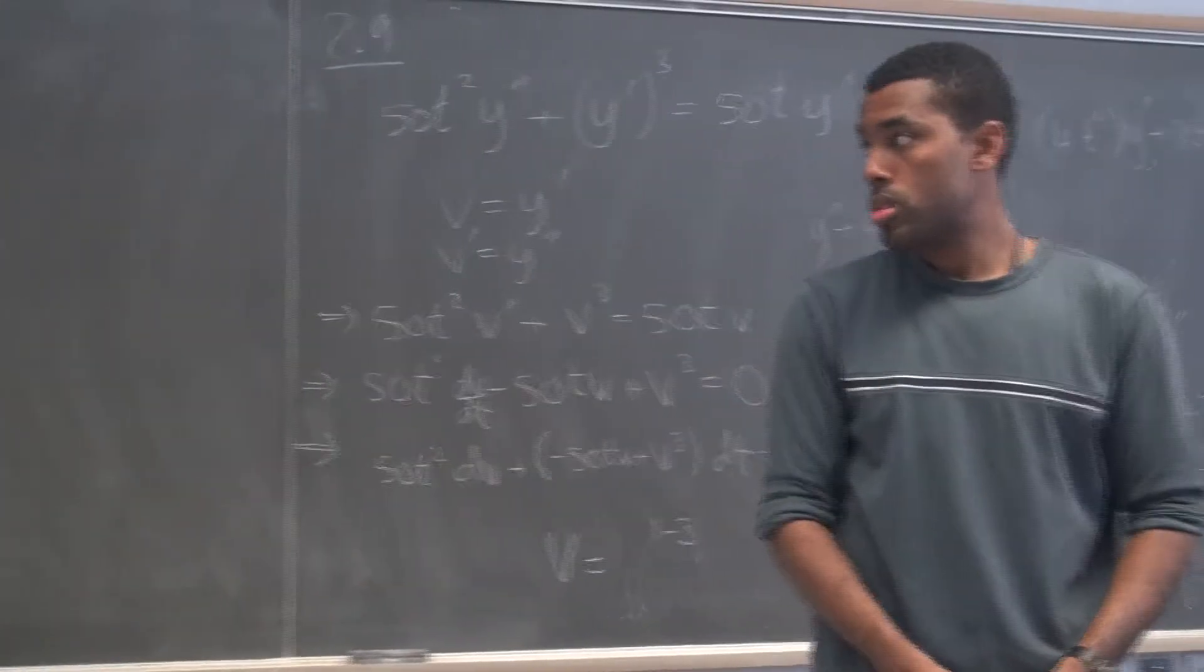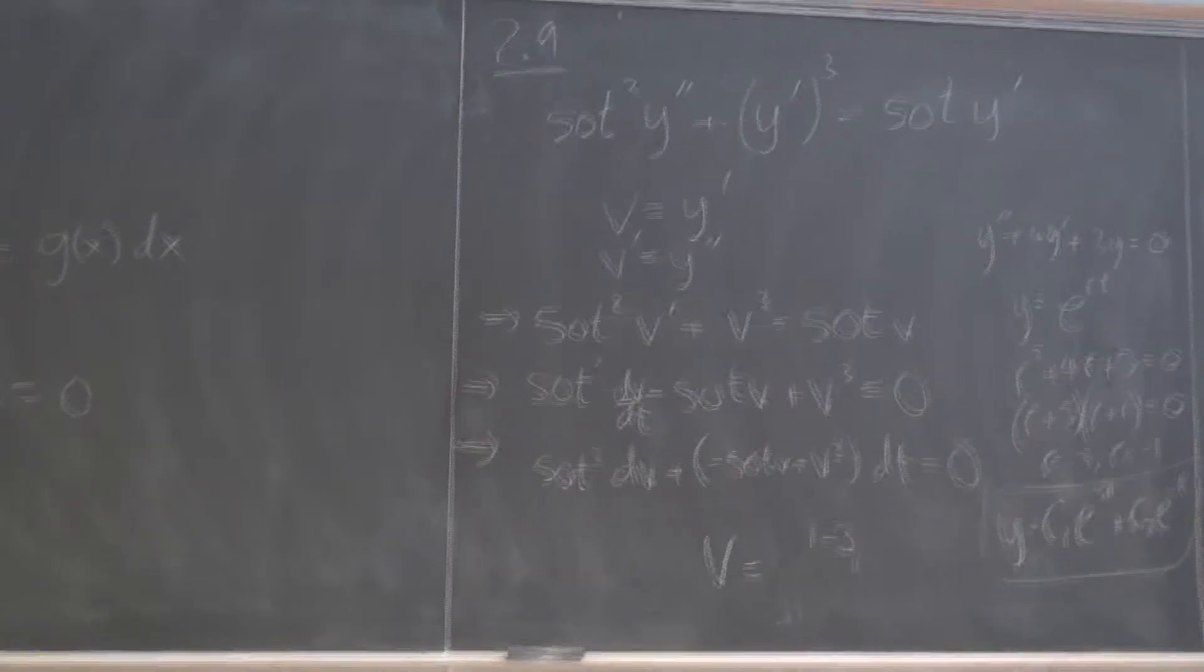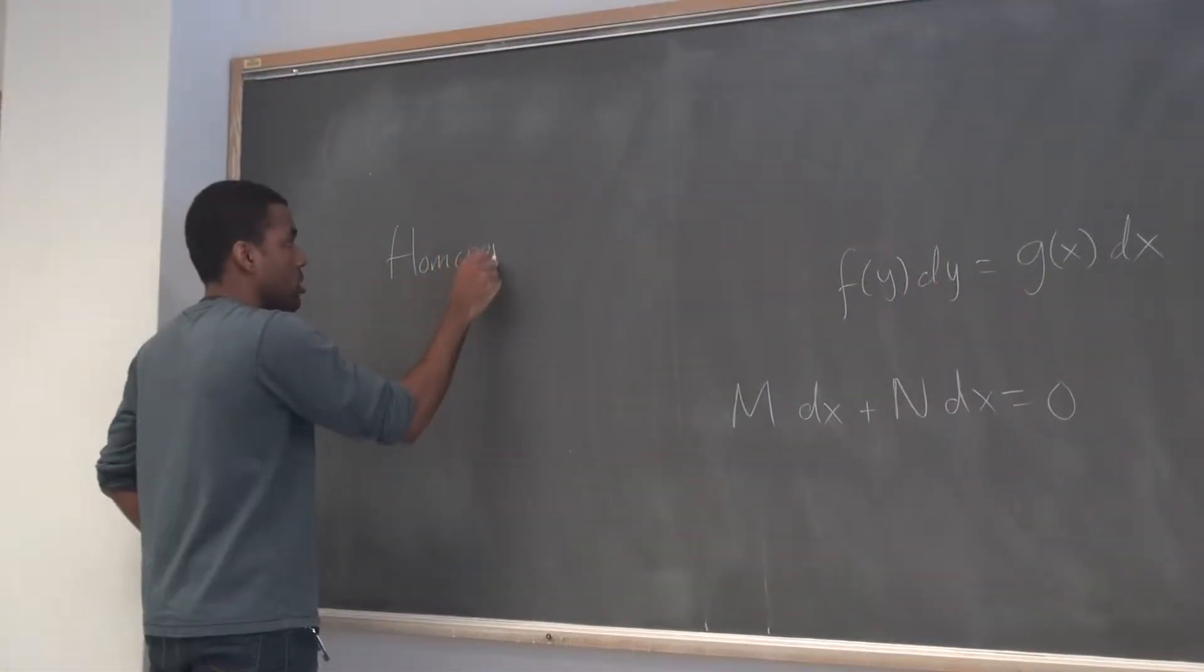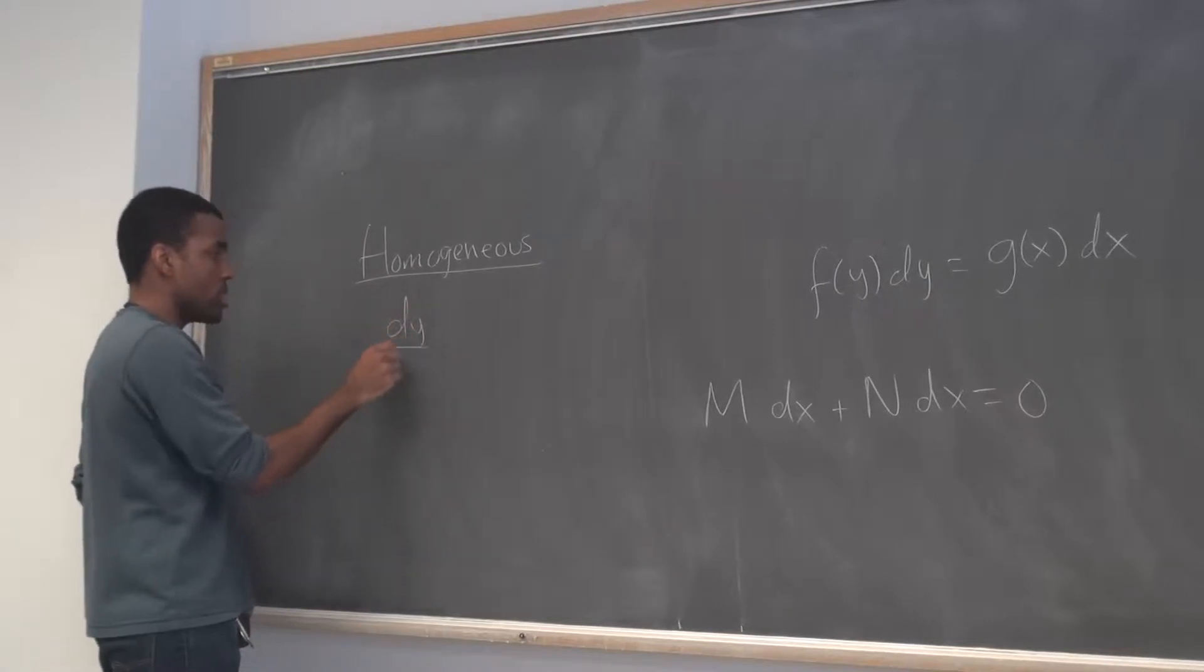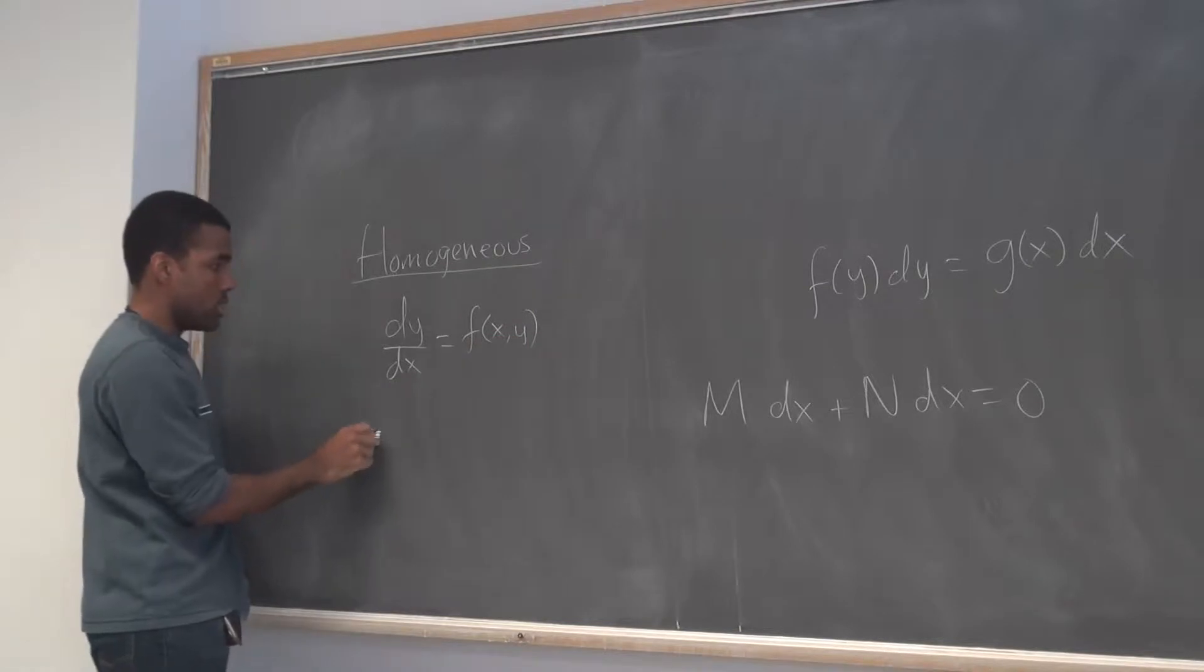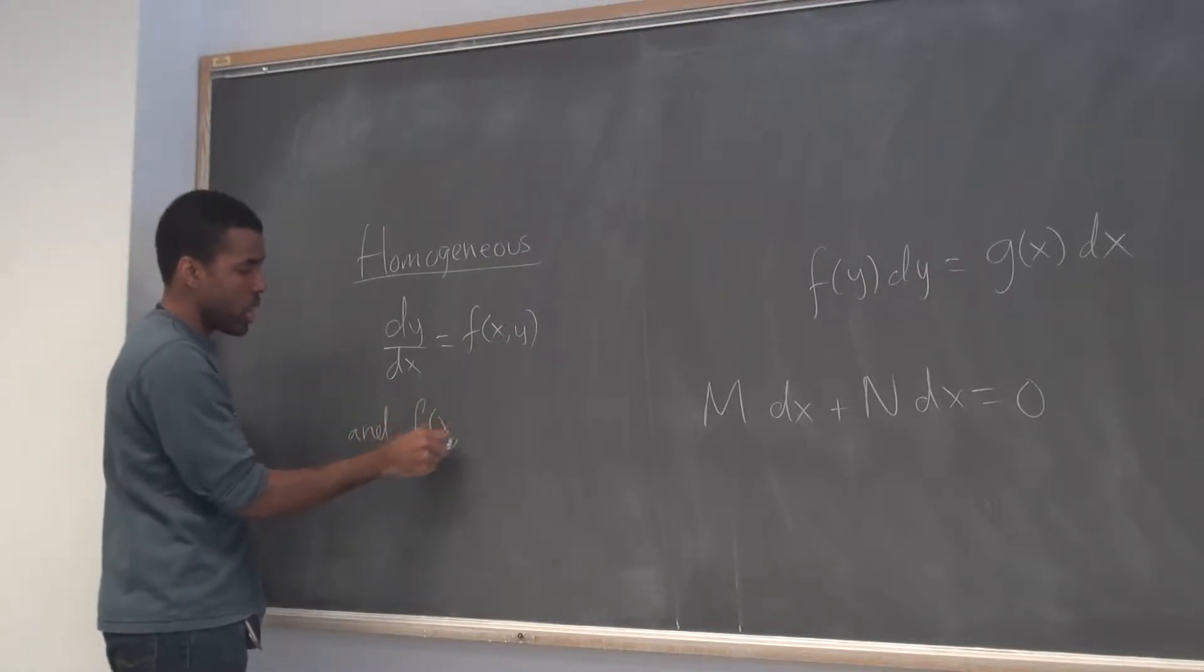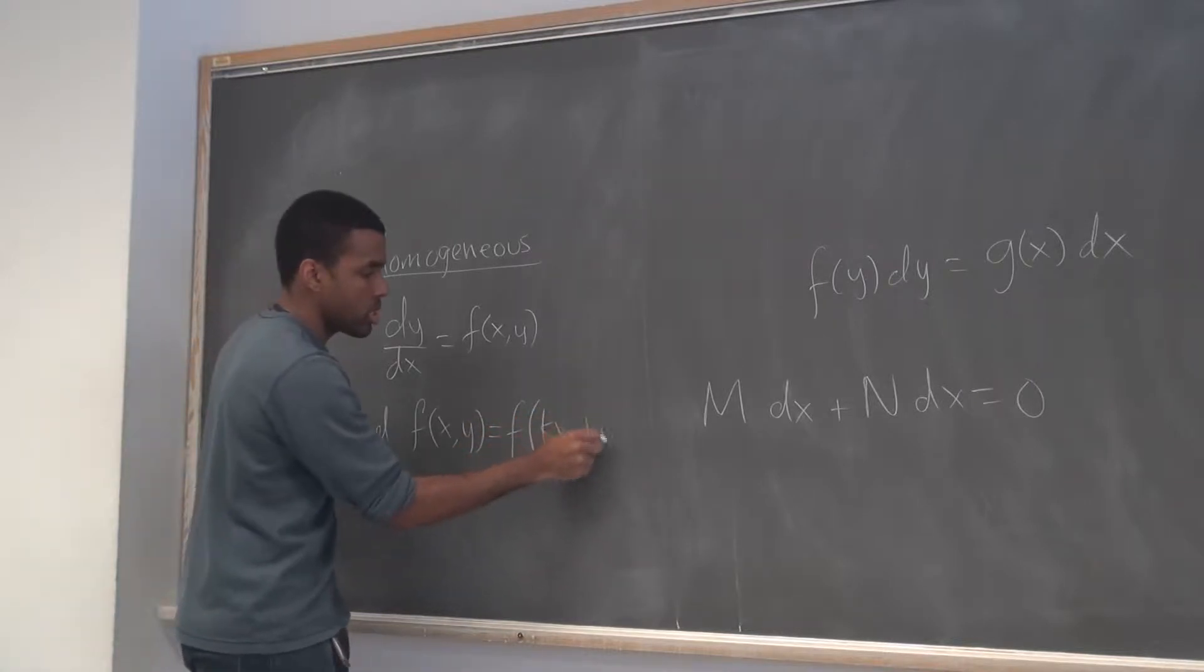Why would x work in the equation? Well, homogeneous means you can write it in the form dy/dx equals some function of x, y. And you can check that f of x, y is the same as f of a constant times x and a constant times y.